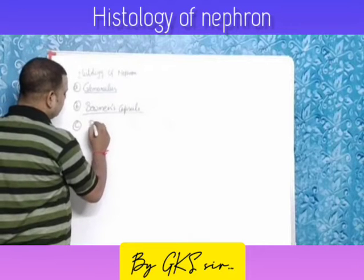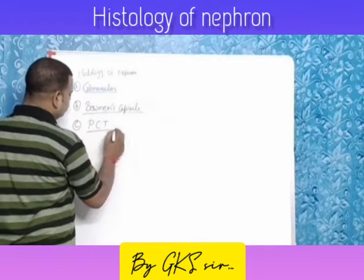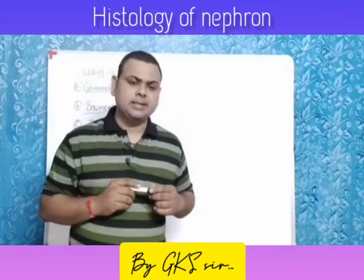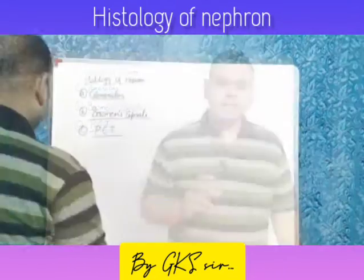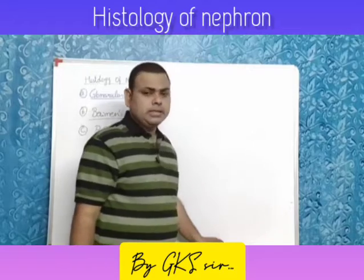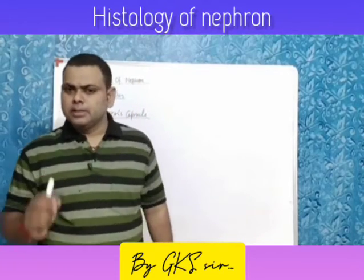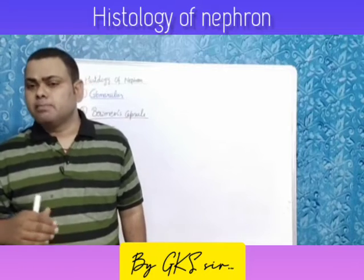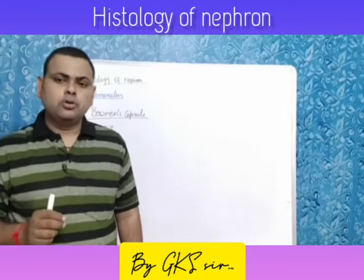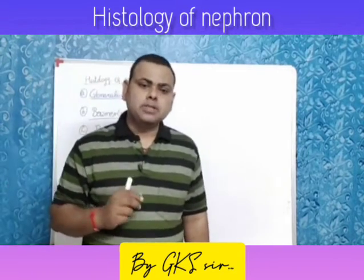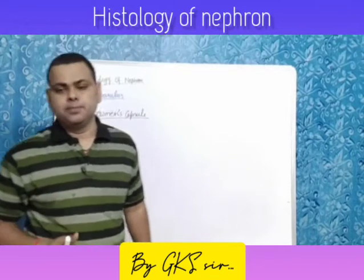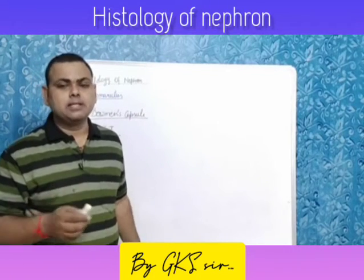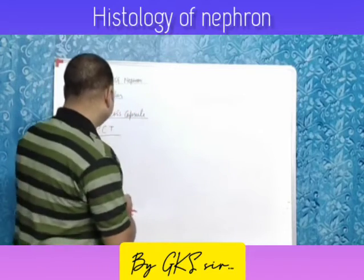Next is the proximal convoluted tubule, or PCT. The proximal convoluted tubule is made up of simple cuboidal epithelium and it has microvilli, so it is also known as brush border epithelium. So in PCT we find simple cuboidal epithelium.